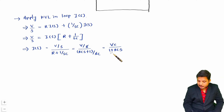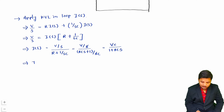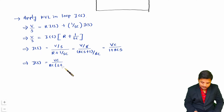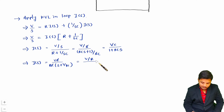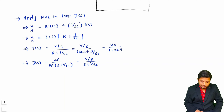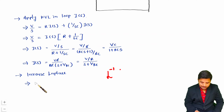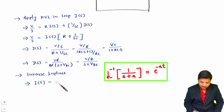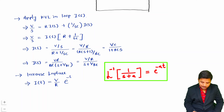To apply inverse Laplace, the denominator should be in the form S plus something. So I take RC common from the denominator, giving V times C divided by RC times the quantity S plus 1 by RC. The C terms cancel, leaving I of S equals V divided by R, divided by S plus 1 by RC. Now we can apply the inverse Laplace transform to this expression.